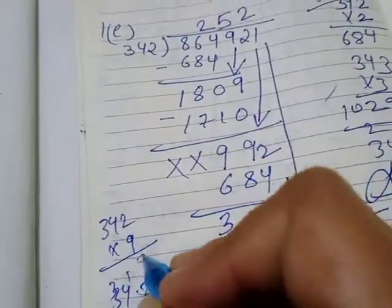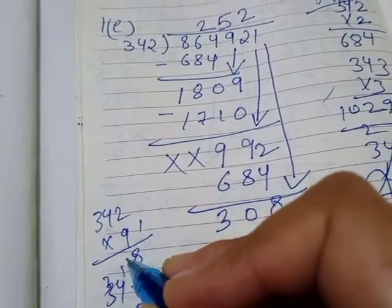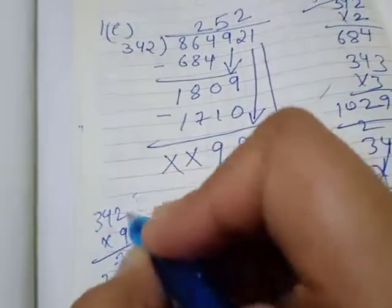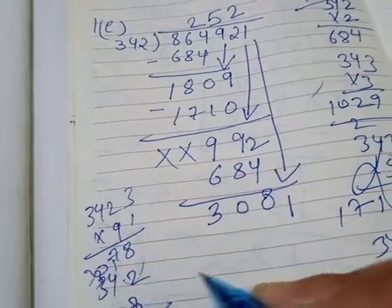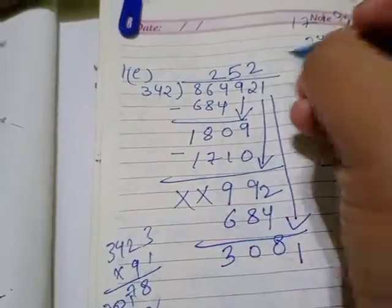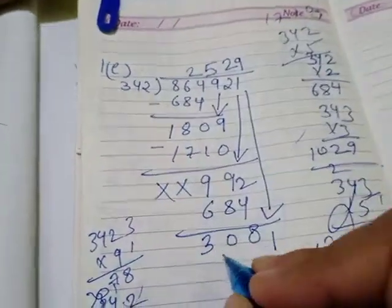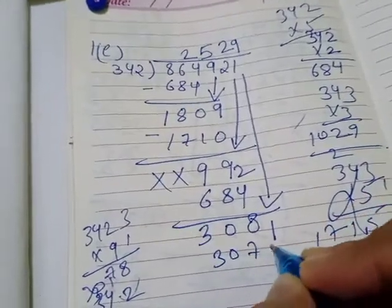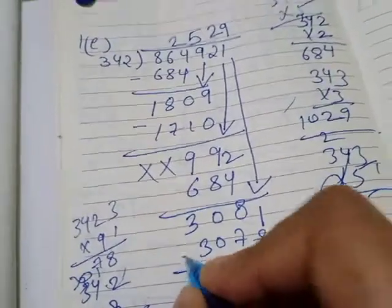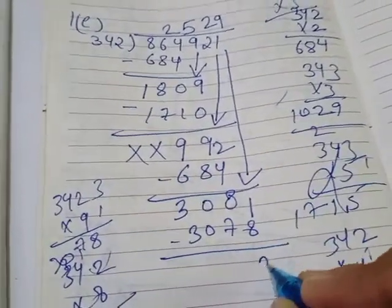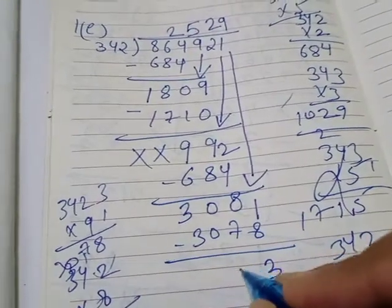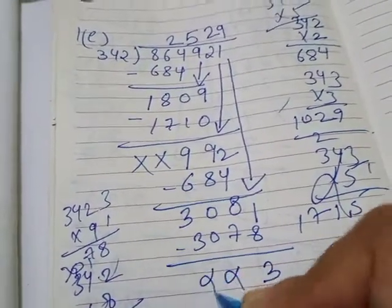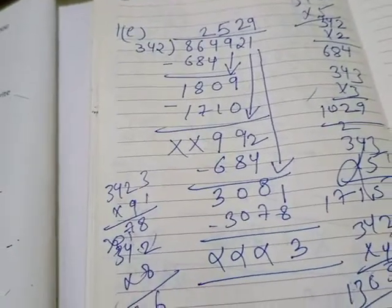9 2s are 18, 19, 9 4s are 36, 37, 39. 9 times we will take here, okay, that will be 3078. Now 11 minus 8 will be 3, and 7 minus 7 will be 0, then here also 0, here also 0. Got it? Clear?